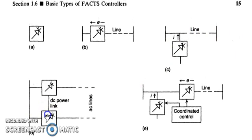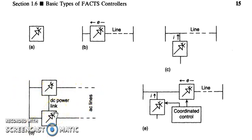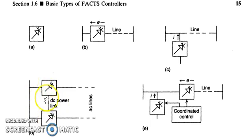Coming to figure D, we have a series-series controller where one controller is connected in series with one transmission line and another is connected in series with a second transmission line, and both are interconnected by a DC power link. This means there can be actual power transfer between the two transmission lines via the DC link — it is not just a control signal line but an actual power link. This allows control of power flow between different transmission lines.